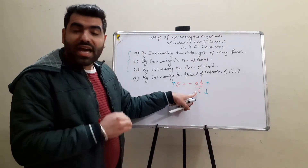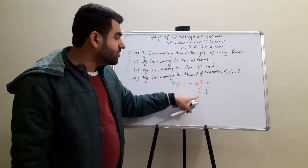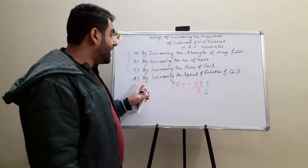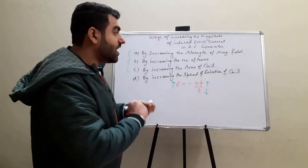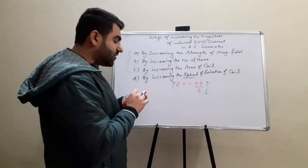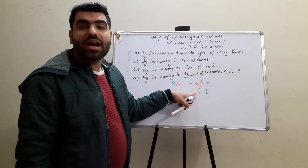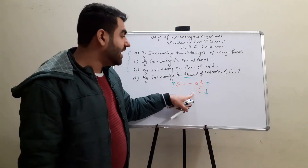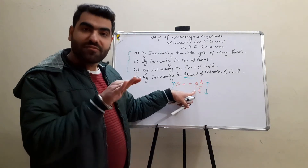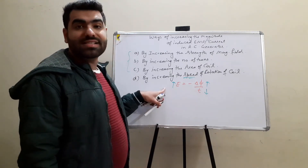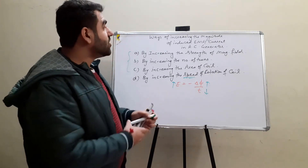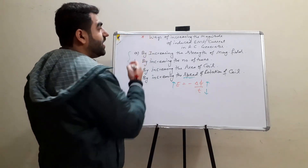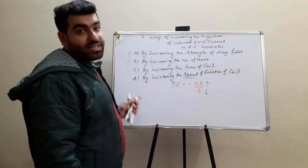If the time of changing the flux decreases, then EMF will be increased. This is done by increasing the speed of rotation. If the speed of rotation increases, the time required to change the flux decreases — the flux changes very rapidly — so the time to change the flux is decreased and hence the EMF is increased. These are the ways of increasing the magnitude of induced EMF or the current.